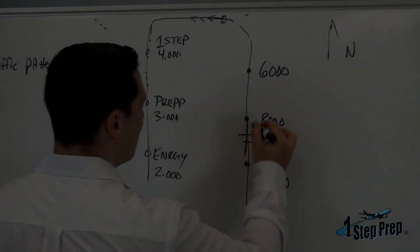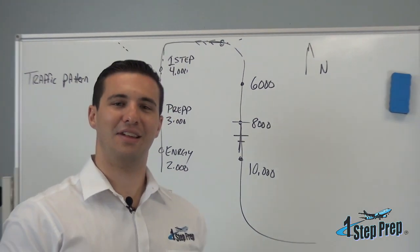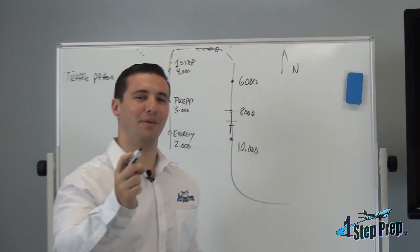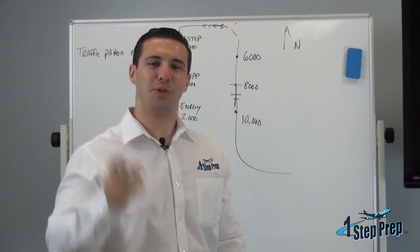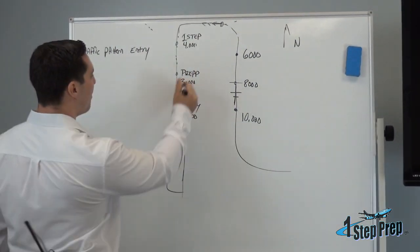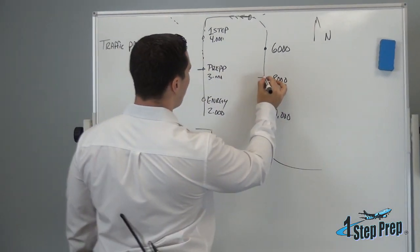If you're tracking downwind to a point that's 8,000, but then they give you a clearance that says, one step prep, trainer one, descend and maintain 3,000 feet. Well, prep happens to be at 3,000 feet, and I'm coming up abeam prep.